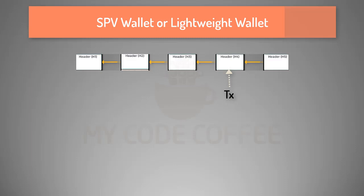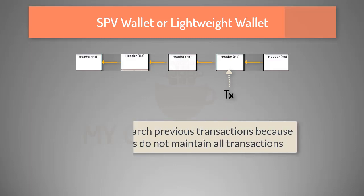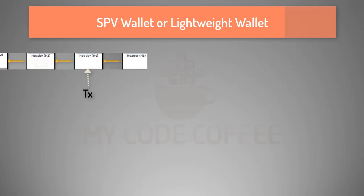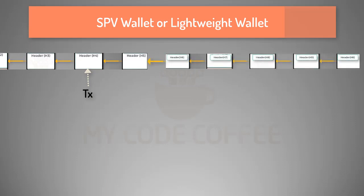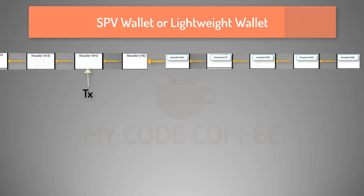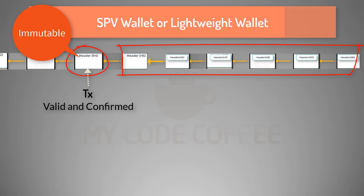Now since the SPV node does not have all the transactions, it has no way to verify a transaction by searching previous transactions the way full nodes do, because the SPV node may or may not have previous transactions. So the SPV node waits to get at least 6 blocks on top of the existing block to which the transaction belongs. Once it gets 6 more blocks on top of it, it assumes that the transaction is valid and confirmed, because by the very nature of blockchain, a block below 6 blocks becomes immutable.